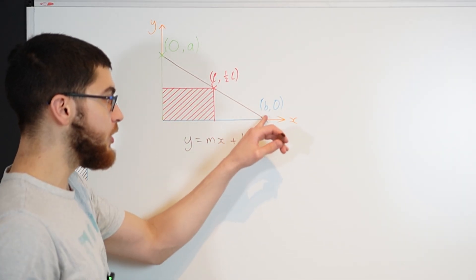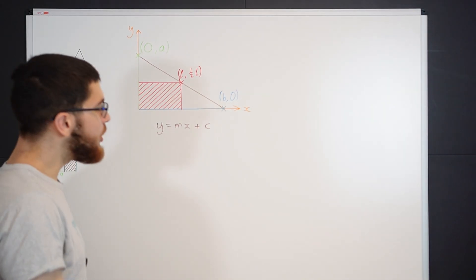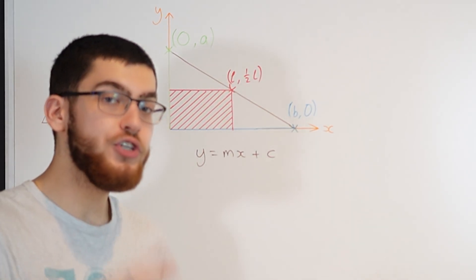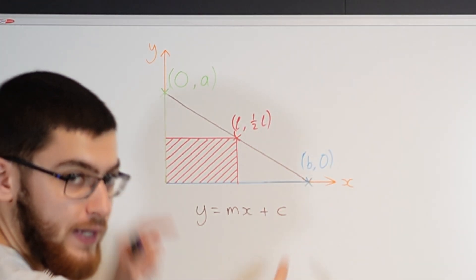But since we've already used the letter B, I'm gonna change it to Y equals MX plus C. We want to find the values of M and C and we can do it by using two points on the graph and the easiest points to use are these end points here.